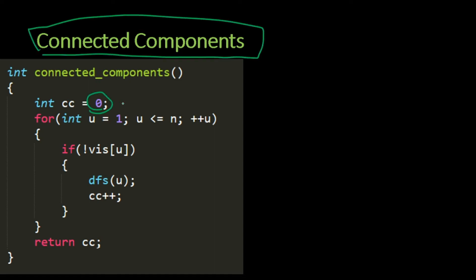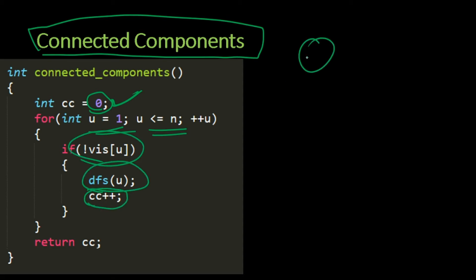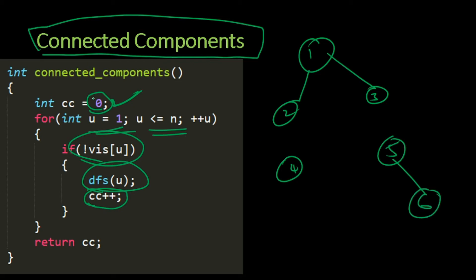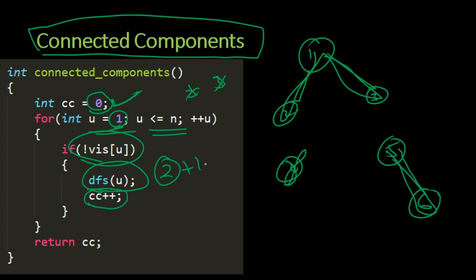I've also implemented the algorithm for connected components. Initially the number of connected components is 0. Then for each vertex, if it is not visited, I do a DFS and increment the component count. For example, with nodes 1 through 6: we start at 1, DFS visits 1, 2, 3 — that's component 1. Node 4 is unvisited so we DFS again — component 2. Node 5 is unvisited — component 3. Node 6 is already visited, so we return cc = 3. This will be explained in detail in the next problem.